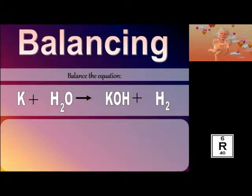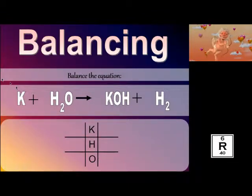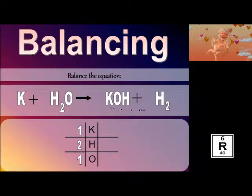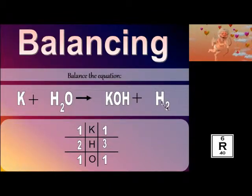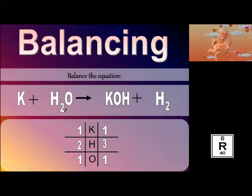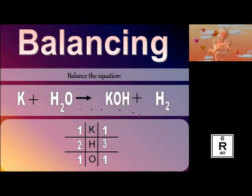Hopefully you gave it a try. When I balance equations, I take a look at how many reactants I have: I've got one potassium, two hydrogens, and one oxygen. On my product side, I've got one potassium, three hydrogens — two here and another one here — and one oxygen. So it is not balanced; my hydrogens are not balanced. I notice that when I'm finally done, my hydrogen will be an even number because it's going to be a multiple of two to have the same amount of hydrogens on both sides, because this is H₂.